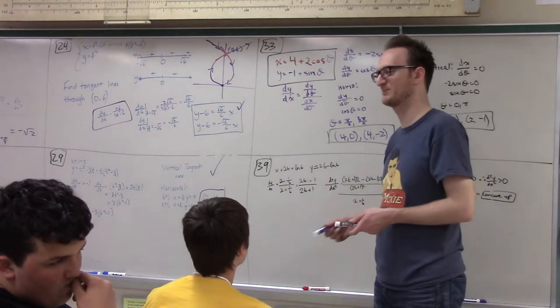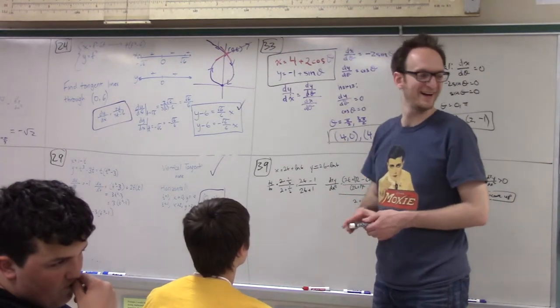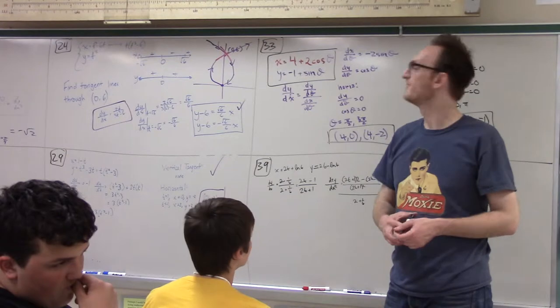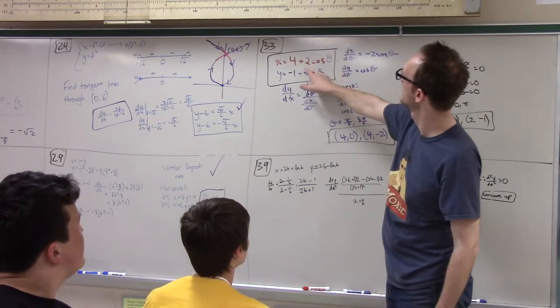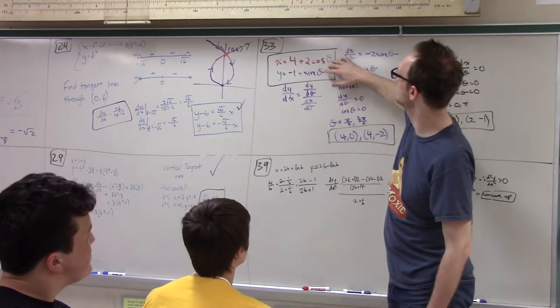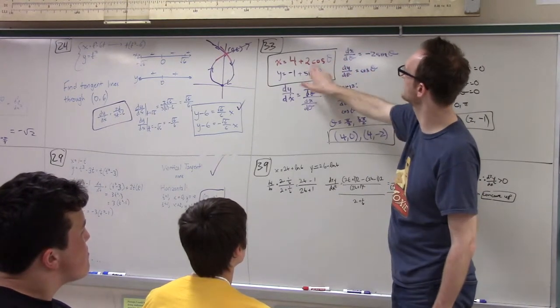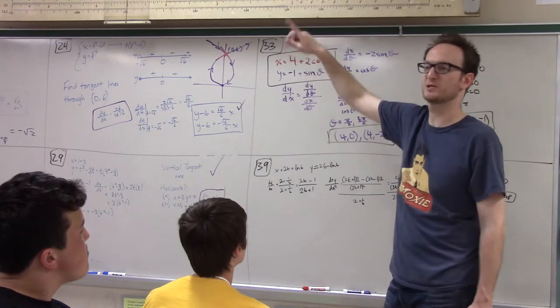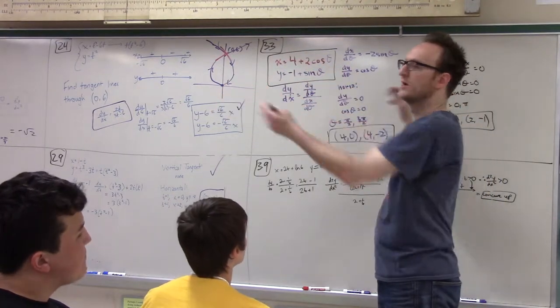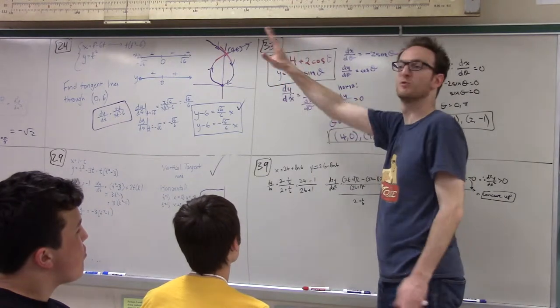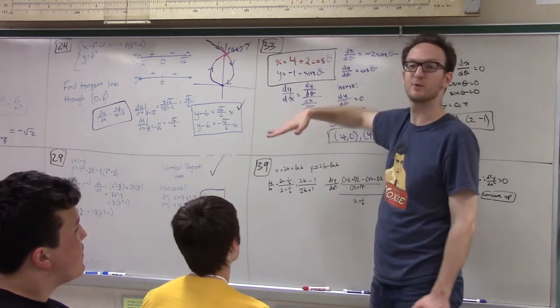This is definitely an ellipse. Remember cosine theta comma sine theta, if x is cosine theta and y is sine theta, that would just be a circle. But this is a circle in which the x coordinate has been stretched out by 2, and x has been moved forward to the right and y has been moved down 1. So this is definitely an ellipse.